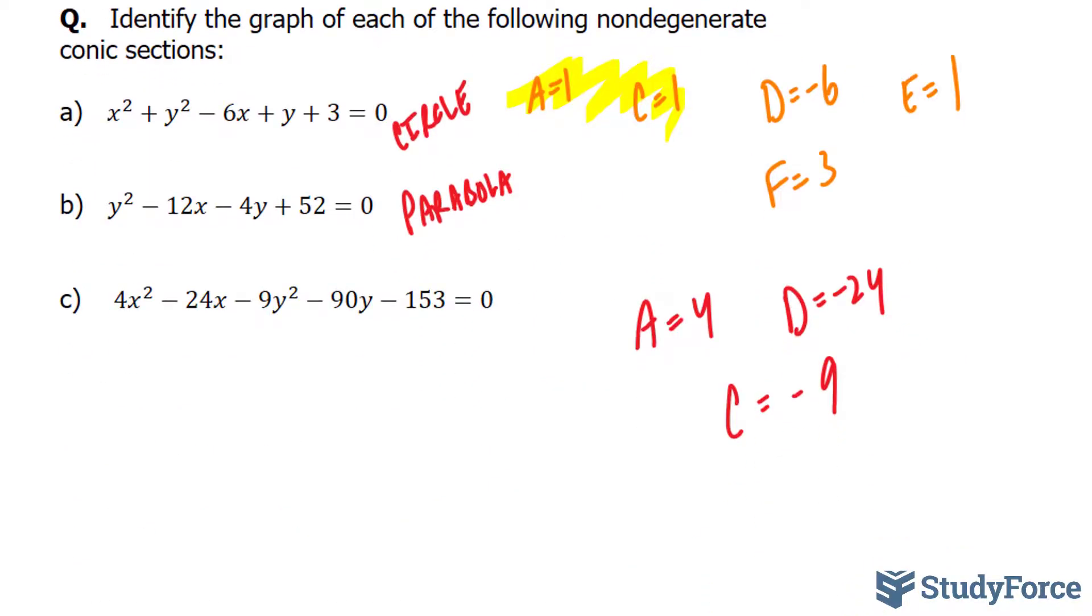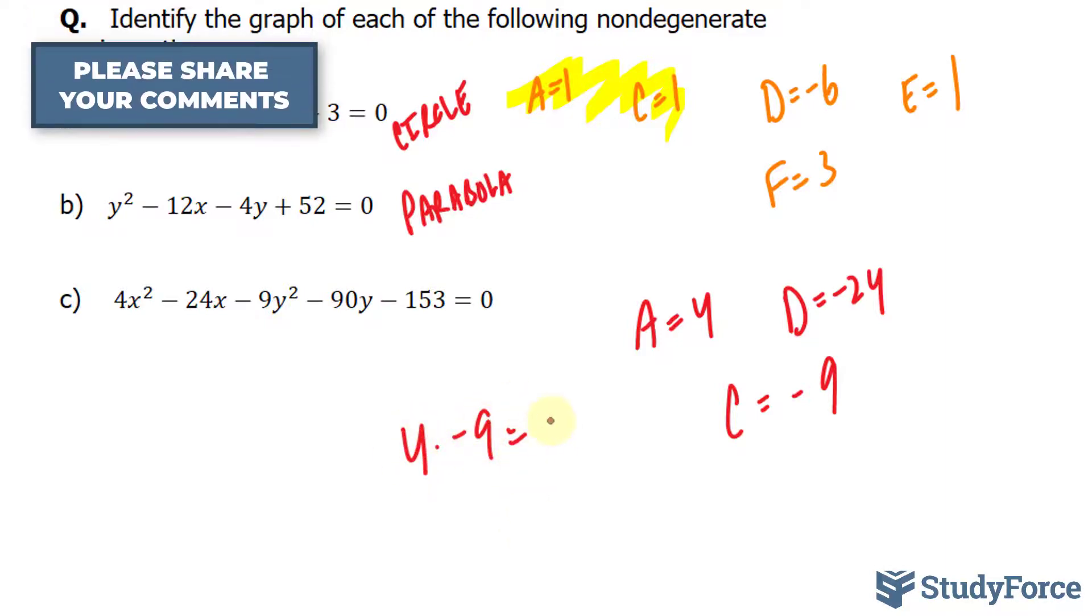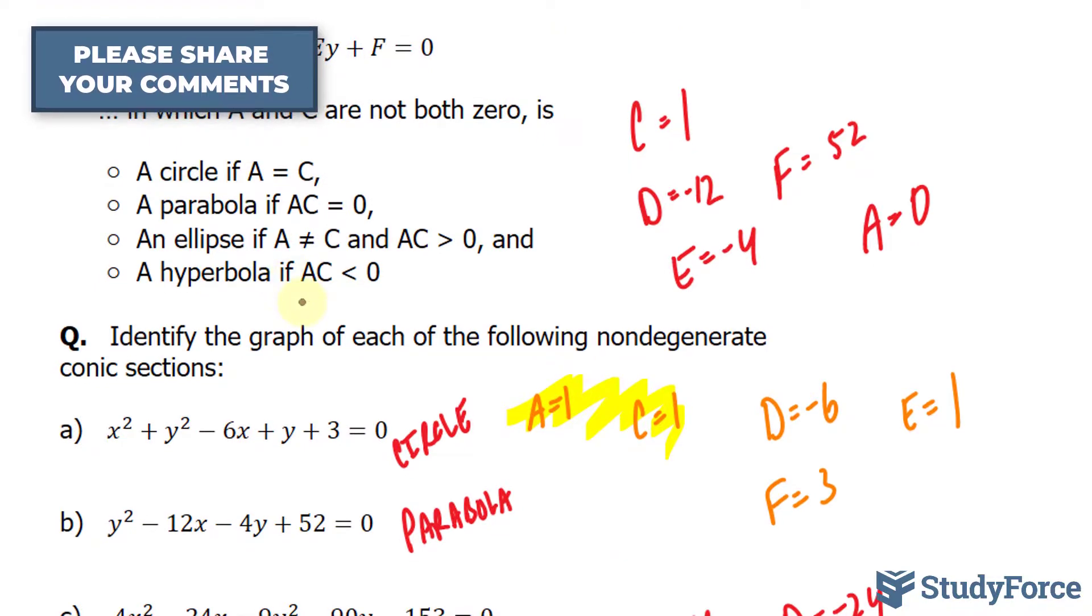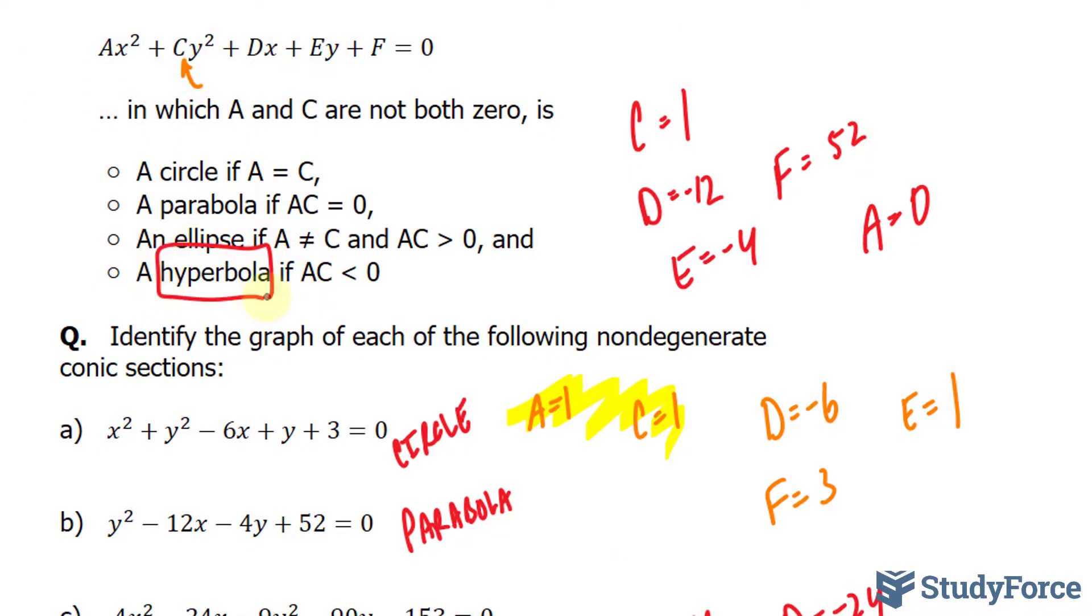We have A and C. If we multiply them together, 4 × -9 = -36. If AC < 0, we have a hyperbola, and that's exactly what we graphed in a previous video.